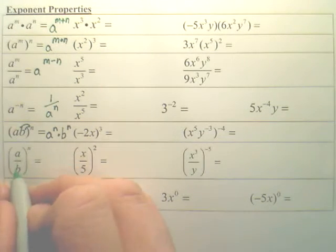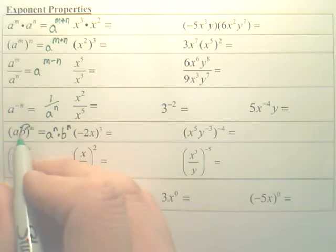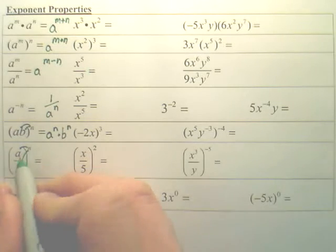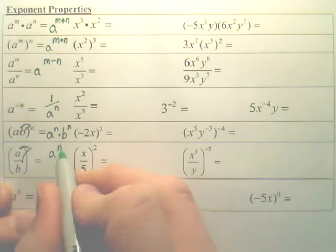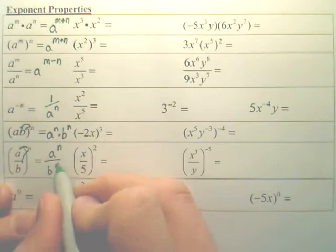Whenever you have a fraction to the nth power, it's identical to this one. You're just going to distribute that nth power to both pieces, so you have A to the nth over B to the nth.